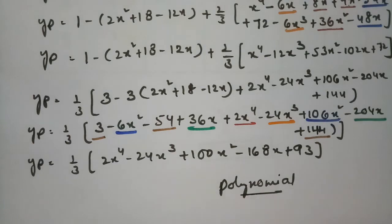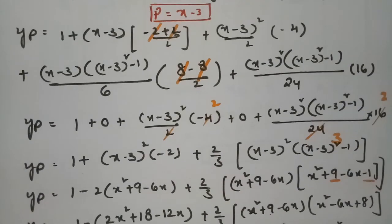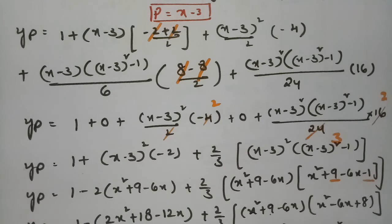So this is how we solve using the Stirling's formula — we substitute each and every value, keep multiplying, and the final answer is the polynomial of degree 4. Thank you so much for watching and staying till the end. I will be uploading the next topic, please have a look. If you like, please subscribe, share it with your friends, and leave a comment below.